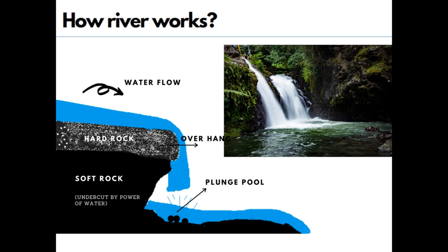First comes the river. A river originates from a mountain and the rushing water erodes the landscape. As the water flows quickly and falls down a steep valley onto hard rock, it forms a waterfall.